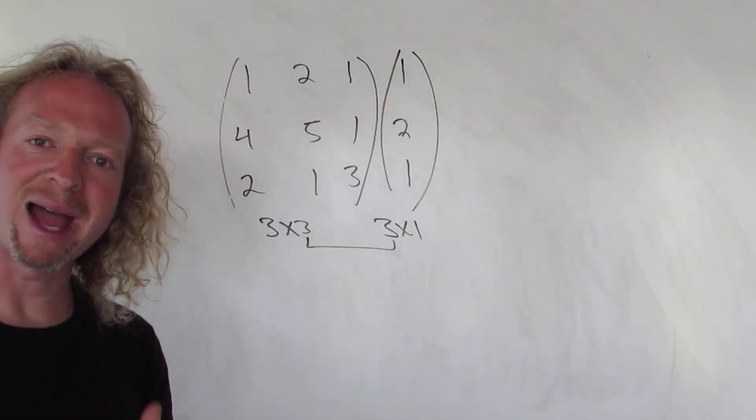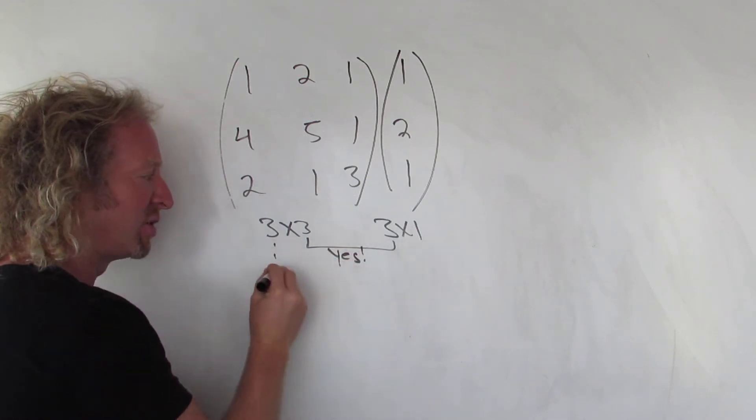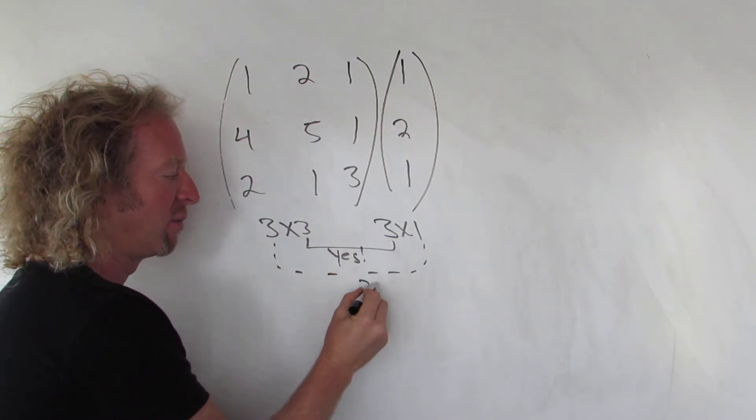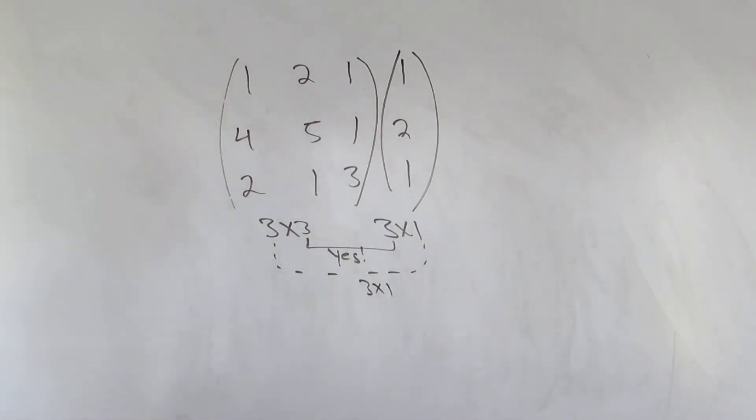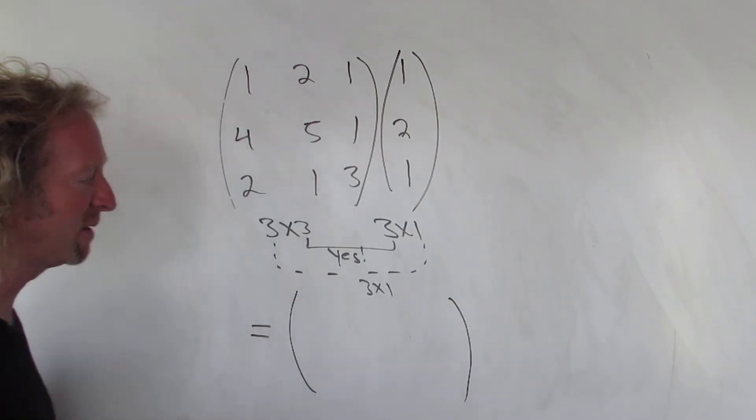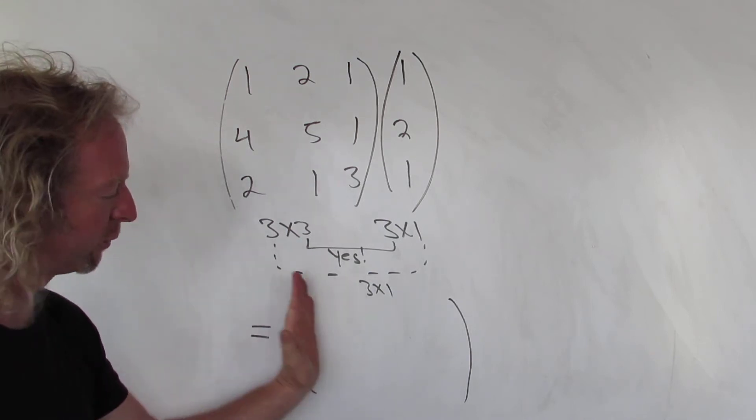Whenever these inside numbers match, you can multiply. So yes you can. And the result is going to be equal to these outer numbers. So the result will be a 3x1 matrix. Okay, so to do this multiplication, I'm going to do it down here. We know it's going to be a 3x1 matrix. So this is the first row, first column.